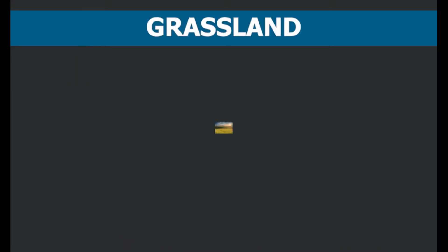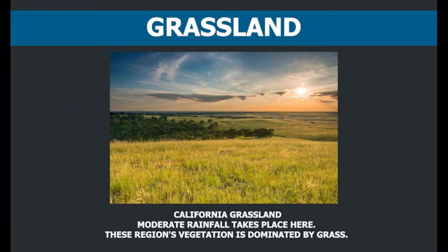There are areas on Earth where moderate rainfall takes place. In these regions, vegetation is dominated by grass. Such habitats are known as grassland habitat.